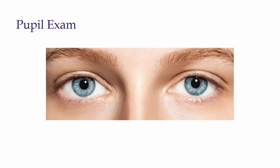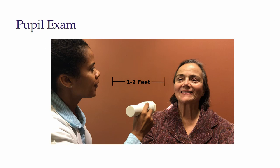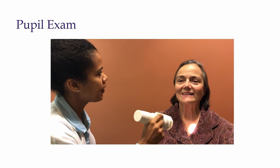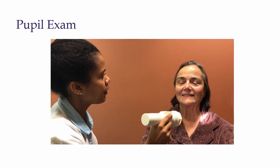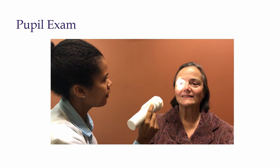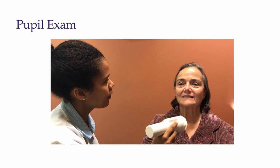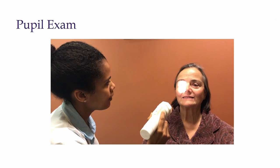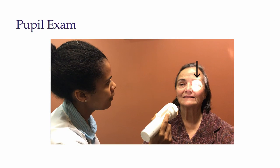The pupil exam is very important. We can use a penlight or flashlight to examine the pupil. We are interested in assessing whether pupils are round, regular, symmetric, and if they constrict to light. Start by standing about one to two feet from the patient and have the patient focus in the distance to prevent miosis. Next, shine the light on one pupil at a time and observe how it constricts. You should also observe the contralateral pupil while shining the light on one pupil — you are looking for a consensual response, meaning that light shown in one pupil elicits constriction in the contralateral eye. You can see in this video that the pupils constrict consensually.